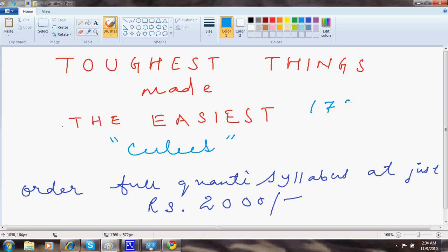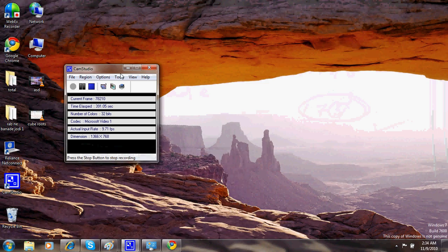Because if the problem becomes 173 cube is how much, you will just look at the options. As this is 3, just see which option is ending in 7. That's it. That will give you the answer. In fact, this kind of sum never comes in bank exam. Thanks for watching.